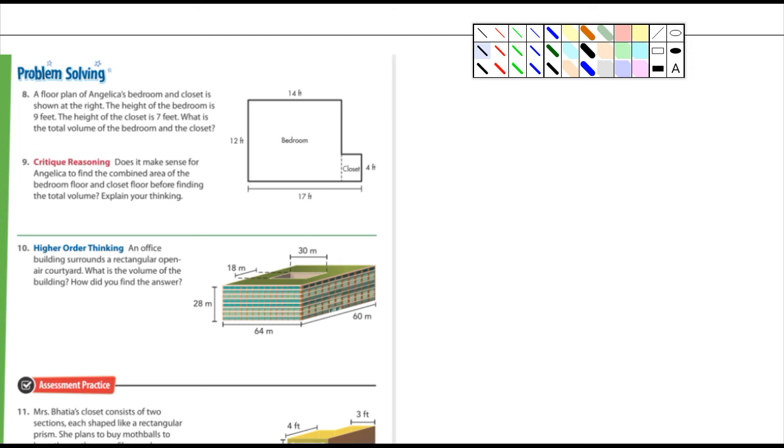Number 10: an office building surrounds a rectangular open-air courtyard. What's the volume of the building? This is kind of an interesting one. Think about this: they're asking you for the volume of this building here. So what you're going to have to do is figure out the volume of the building, then you've got to figure out the volume of the courtyard and subtract it from the volume of the building, and then you would have the volume of the building.